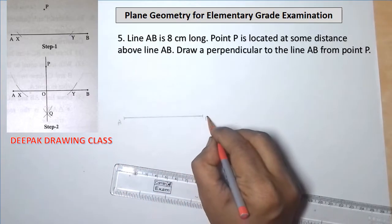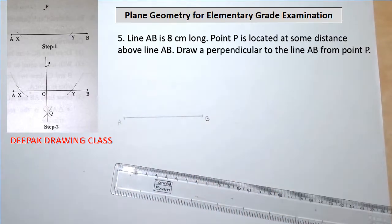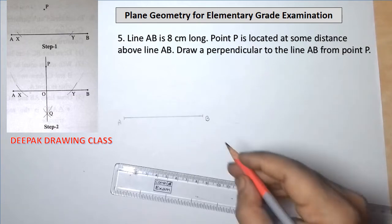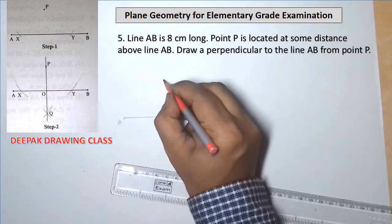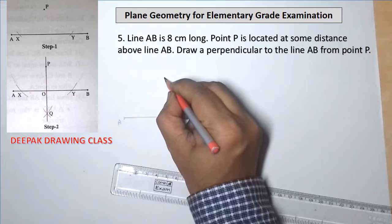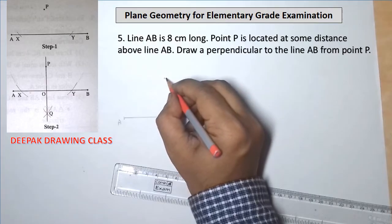Firstly, draw a line AB of 8 centimeter long. As stated in the question, mark point P at some distance above line AB.